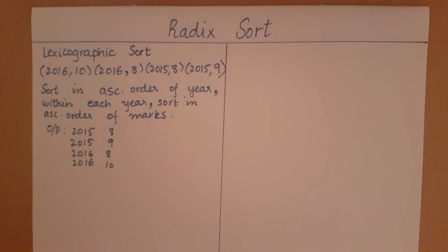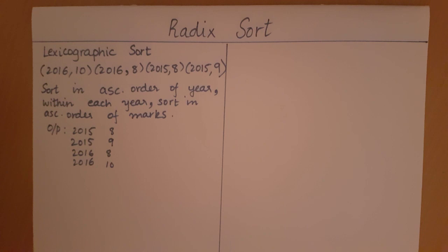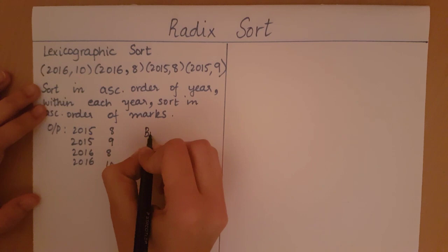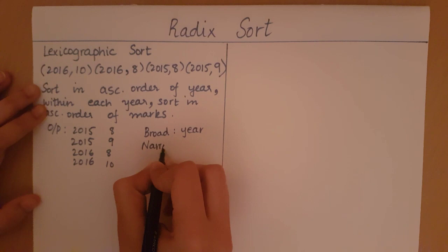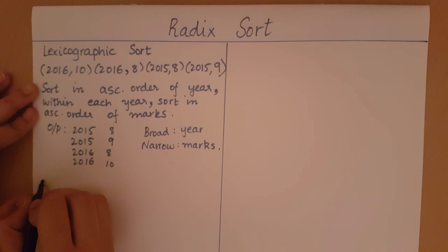So how are we going to achieve this order? We start with the most narrow dimension. In this example, year is going to be the broader dimension and marks are going to be the narrower dimension. So we start by sorting with respect to marks.